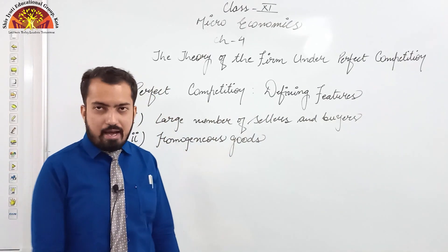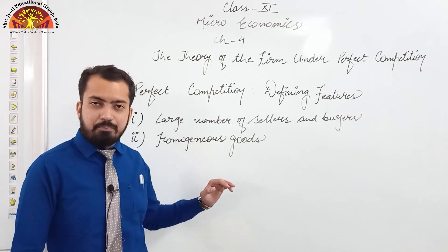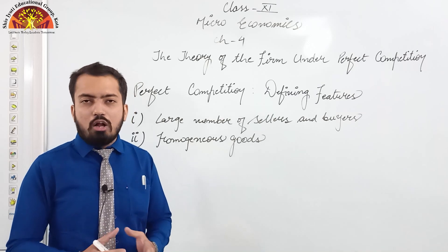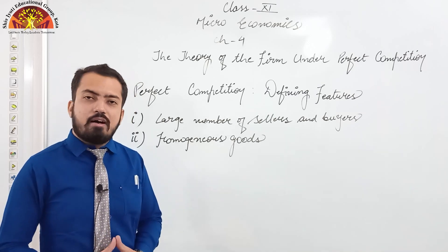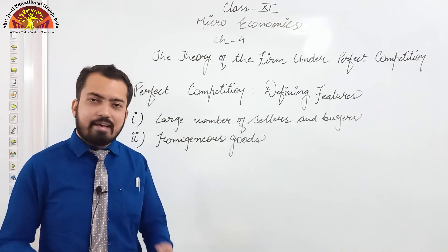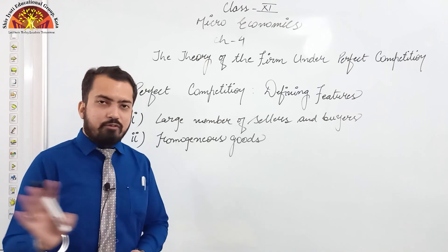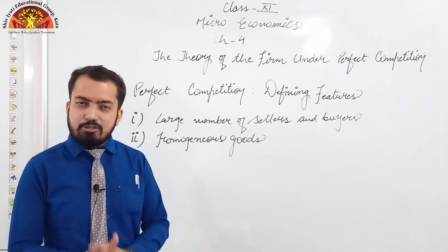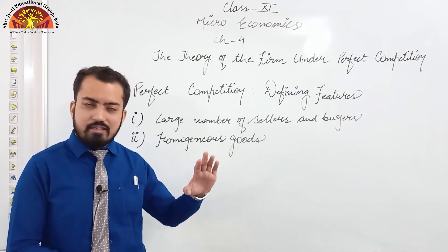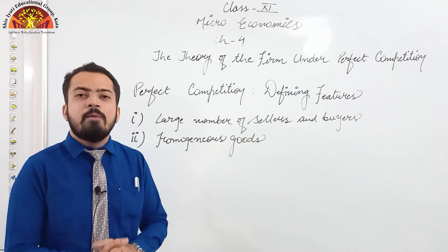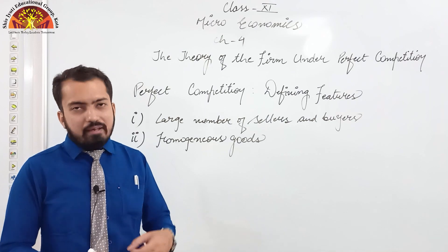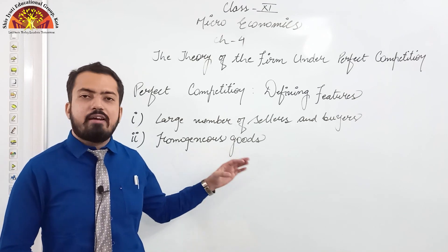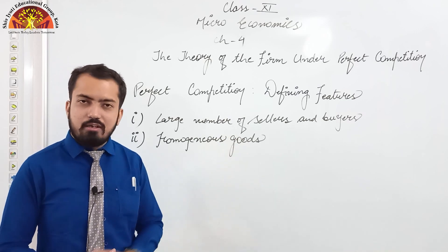The next point is homogeneous goods. This is a market form where homogeneous goods are used. What does homogeneous goods mean? Any product or goods which is similar in all aspects — such as color, texture, trademark, brand name, packaging, etc. — is a product we cannot distinguish between. That is why customers have no attachment to any particular brand, because all products are similar in every aspect. There is no differentiation possible, and since there is no speciality, the consumer or buyer cannot have any attachment to any particular brand.